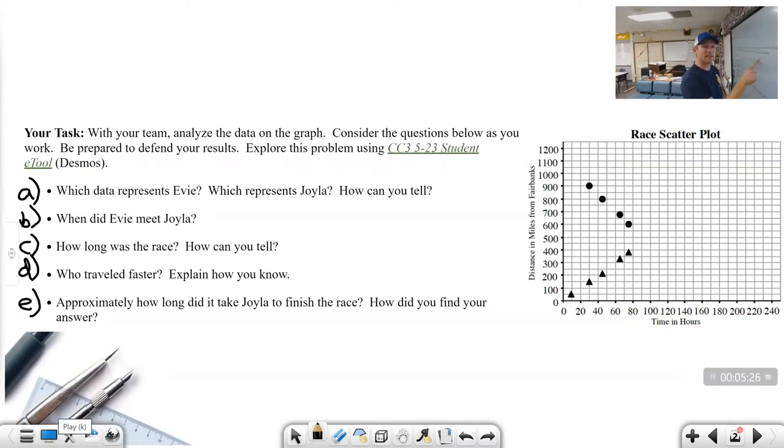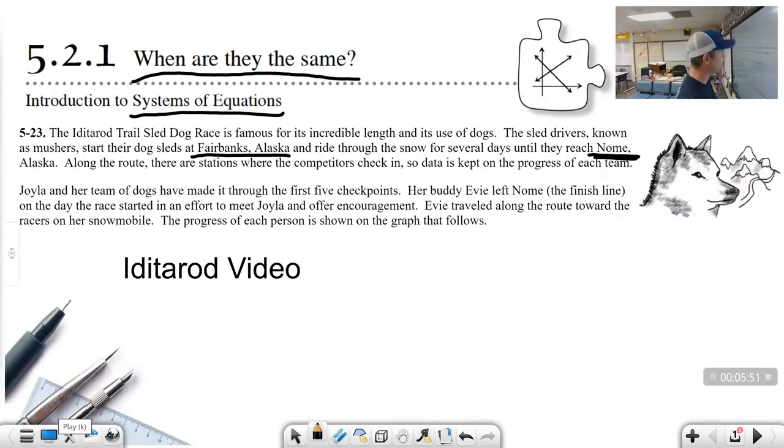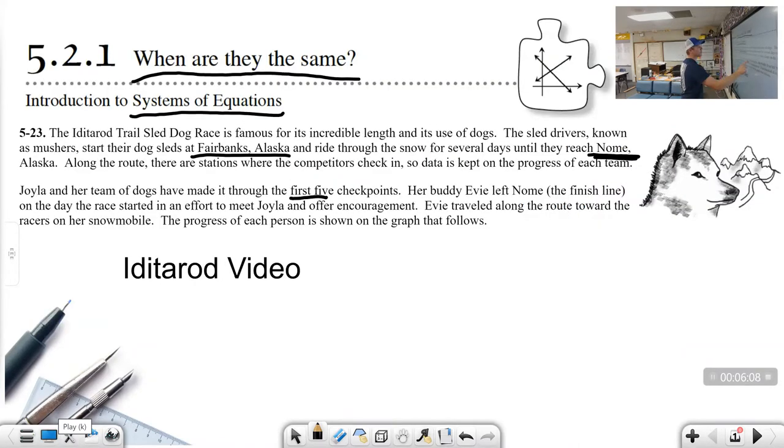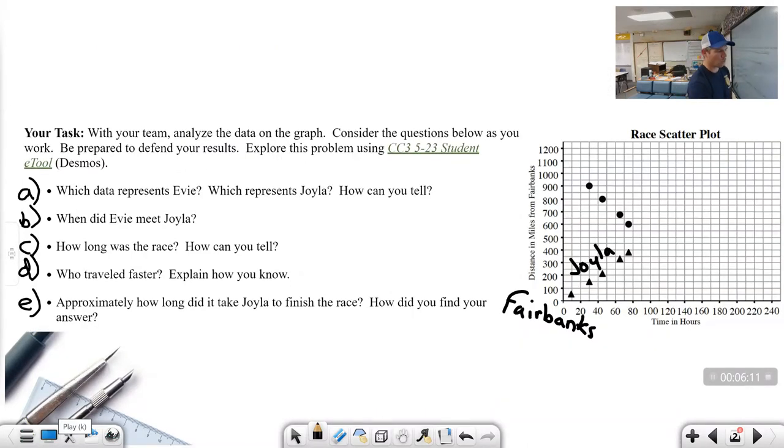Wait a second, distance of miles from Fairbanks. How far is Fairbanks from Fairbanks? Fairbanks is zero miles from Fairbanks. That's how I know that Fairbanks is down here. So if this is Fairbanks, which of the individuals was leaving Fairbanks? Let's go back. Joila and her team of dogs have made it through the first five checkpoints. That means she's one of the competitors. That means this is Joila. Another piece of information, the first five checkpoints. I notice there are one, two, three, four, five checkpoints.